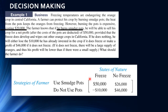Start with your table: states of nature across the top, strategies along the side. Then look at your blanks and try to figure out from the data which values match each combination — using pots and it freezes, using pots and it doesn't freeze, doing nothing and it freezes, doing nothing and no freeze.